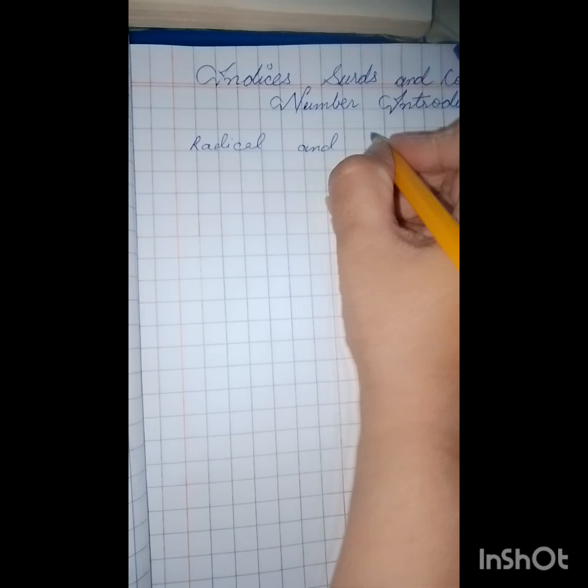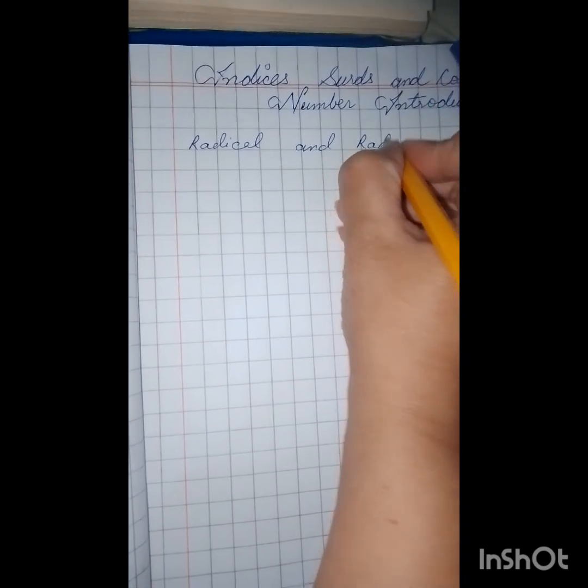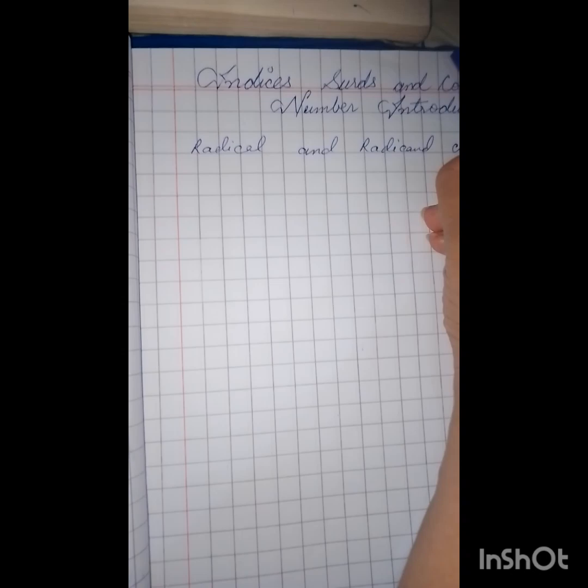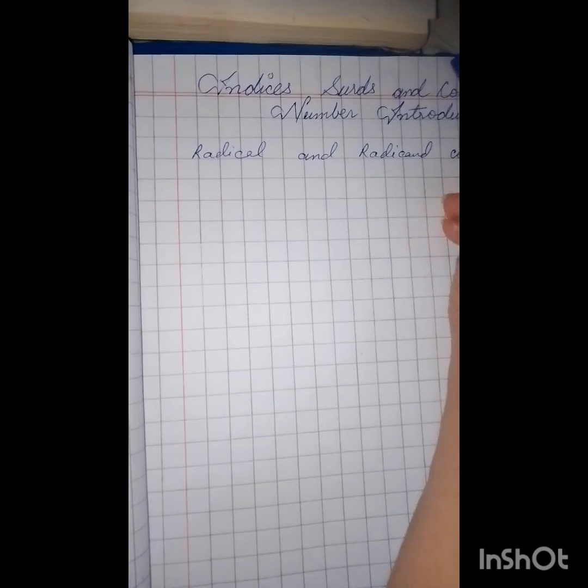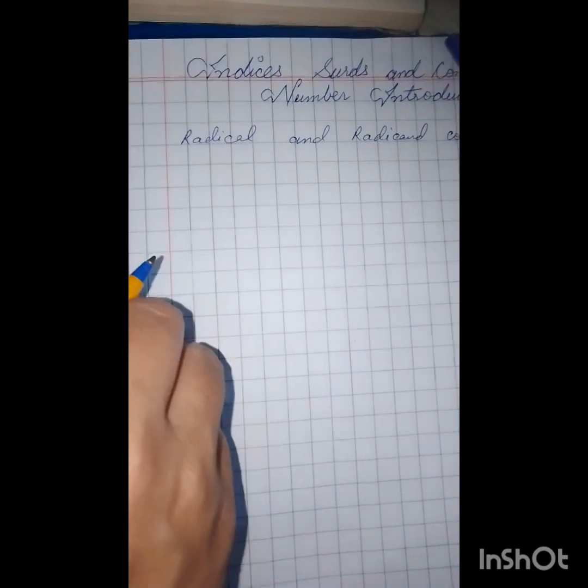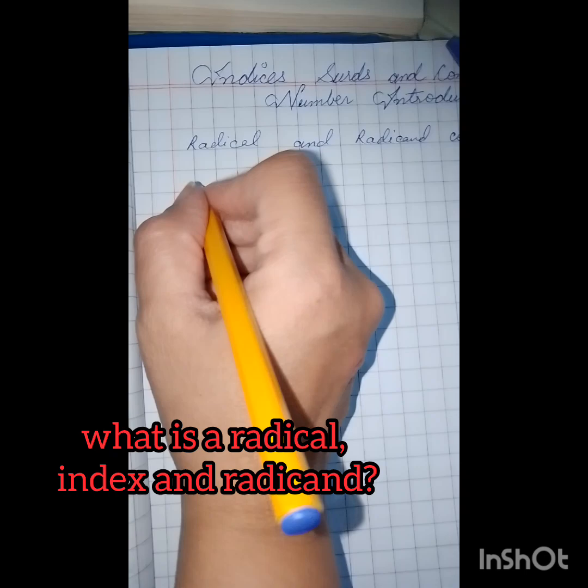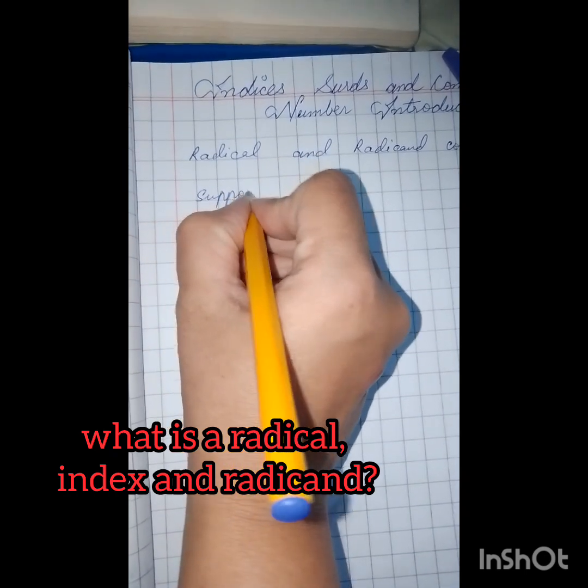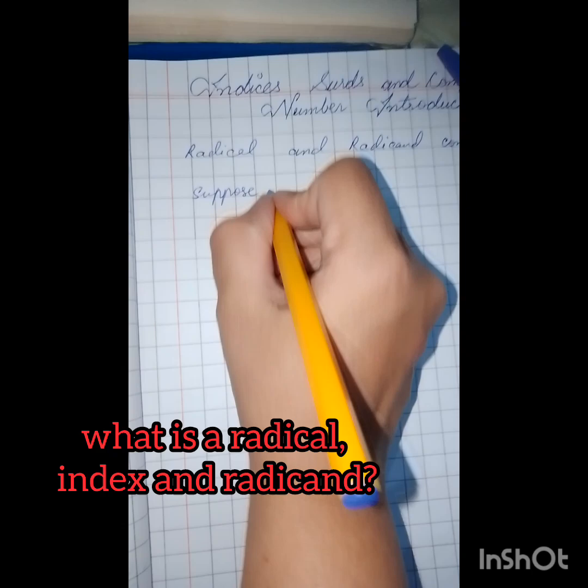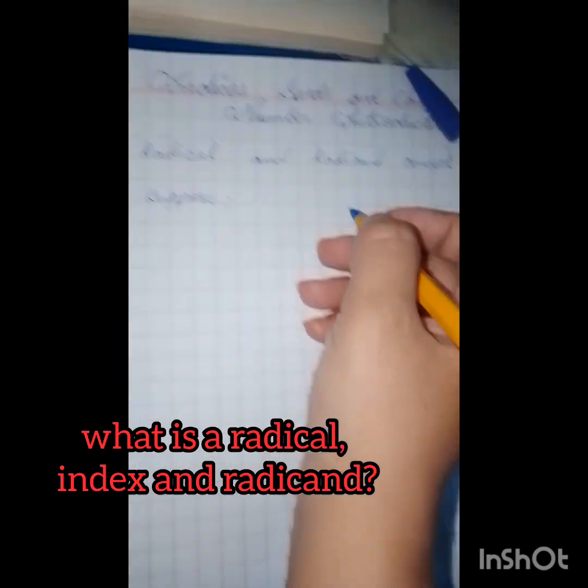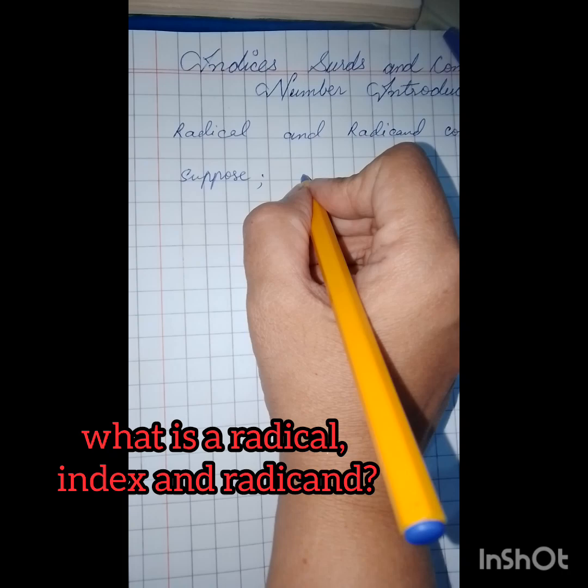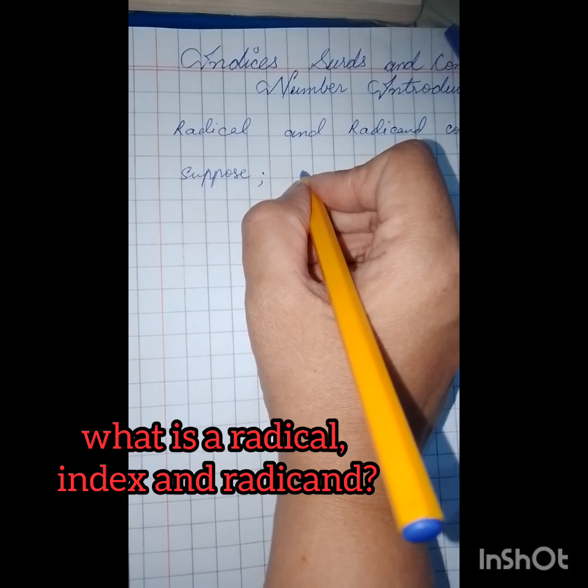If we discuss the radicals and radicands concept and easy mathematical definition, we can understand it by: if n is a positive integer greater than 1 and a is a real number, then any real number x such that x raised to the power n equals a is called the nth root of a.